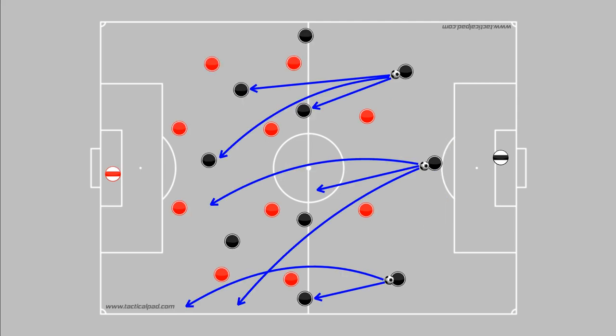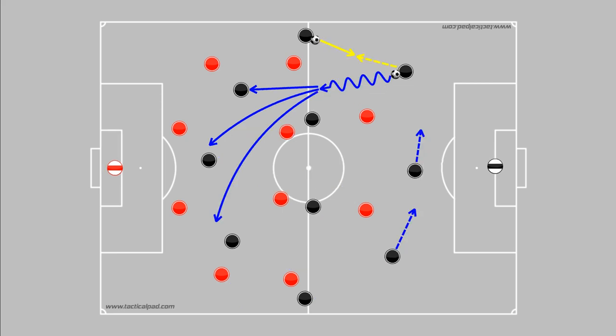A back three can also provide an extra central passing option in the first line during the build-up phase and wide options for a switch of play. Both of these are useful when trying to beat a high press. With two other center backs present, one can also step into midfield to create an overload or move wide in the opposition half to support the wingback.